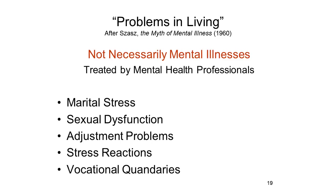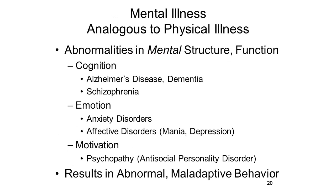People in a stressful marriage may seek marriage counseling. People with various forms of sexual dysfunction may seek treatment. Adolescents and adults who have just moved from one situation to another may have problems making the adjustment. There may be stress reactions—the stress of losing your job or your marriage—and you need some help getting through it. Sometimes there are vocational quandaries. Sometimes these problems can be resolved by people working by themselves, but when that's not enough, they consult mental health professionals—psychiatrists, psychologists, social workers, marriage and family counselors. There's no implication that these people are mentally ill in the sense that people with schizophrenia or depression or anxiety disorder are mentally ill, but they do need help, and certain mental health professionals are equipped to provide that service.